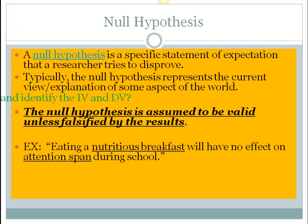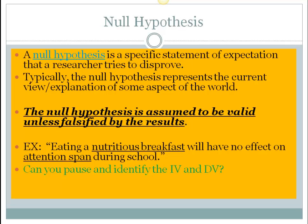Basically, the research hypothesis is the one we're trying to support, and the null is the current belief that we're trying to disprove. Stop here and practice identifying the independent and dependent variables in the breakfast question. You might also try to operationalize those variables — do you remember what operationalizing means? Take a moment. We'll talk about that in class tomorrow.